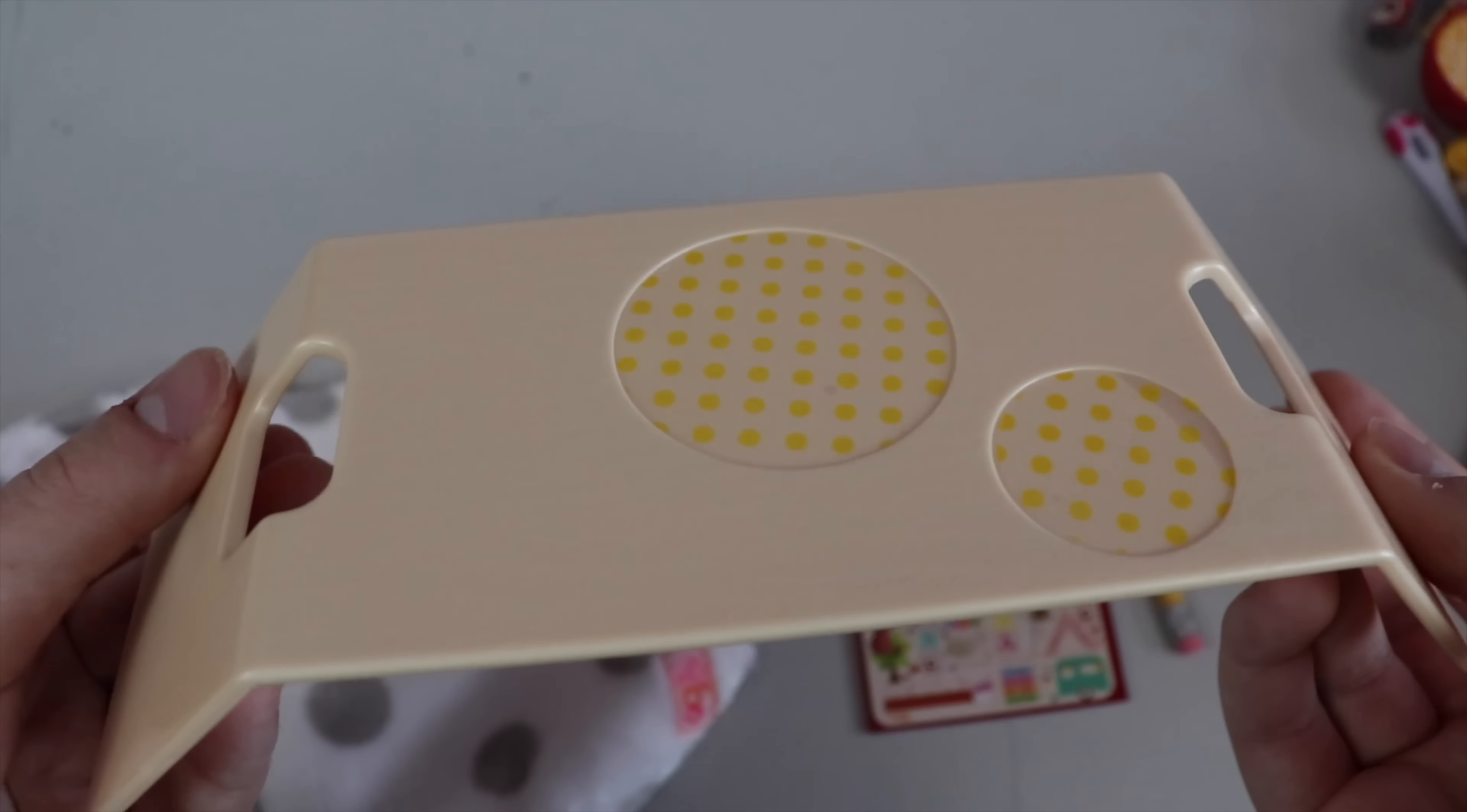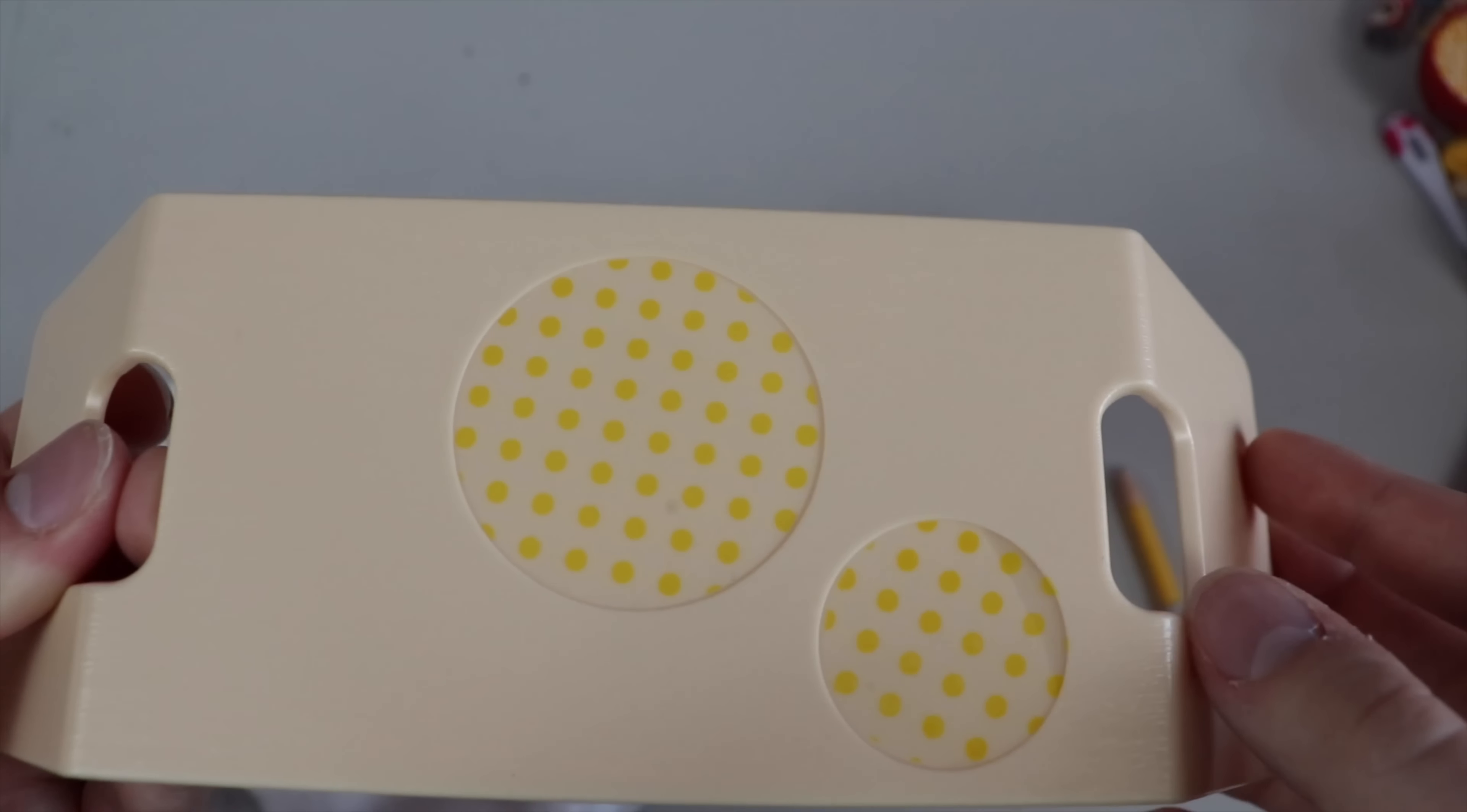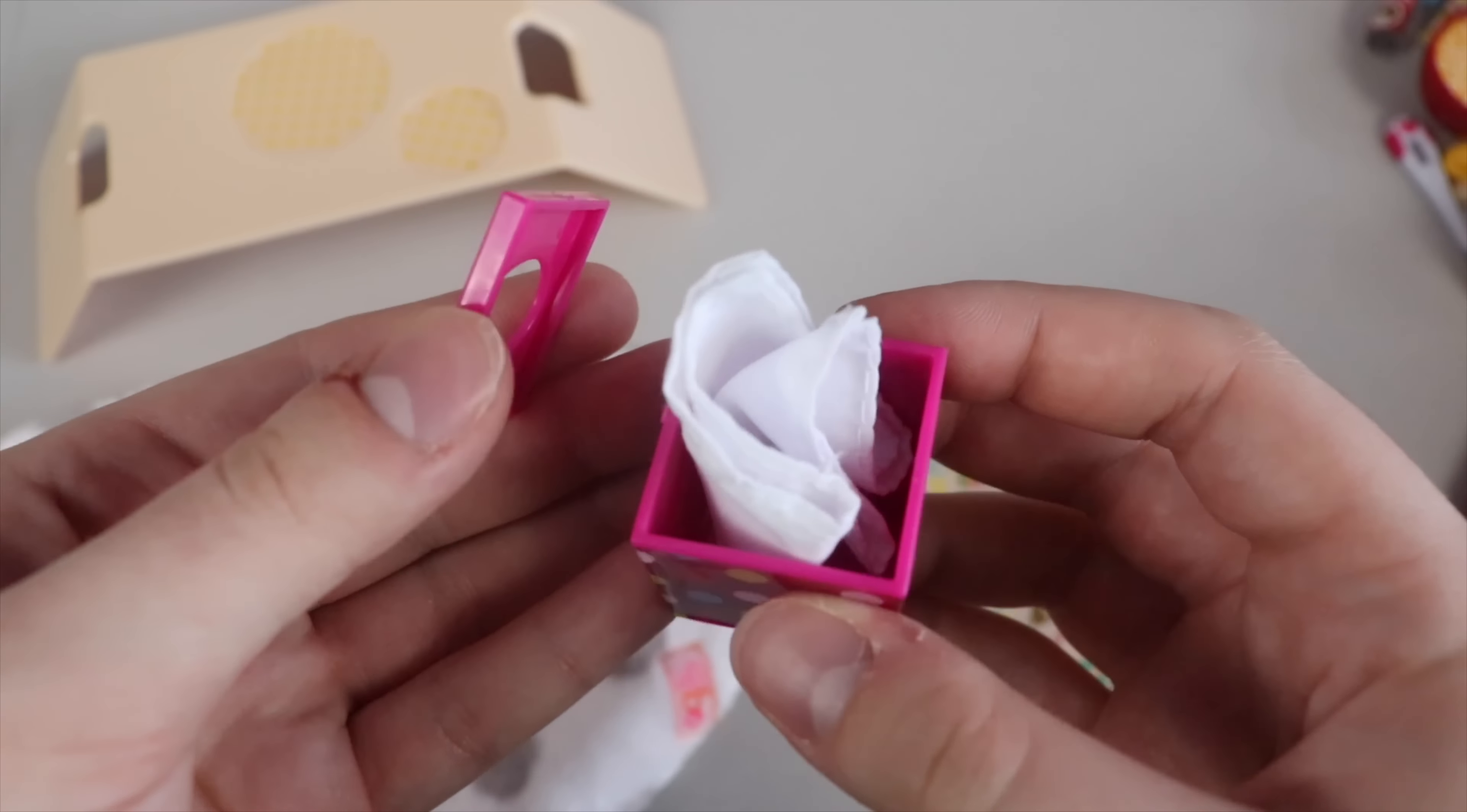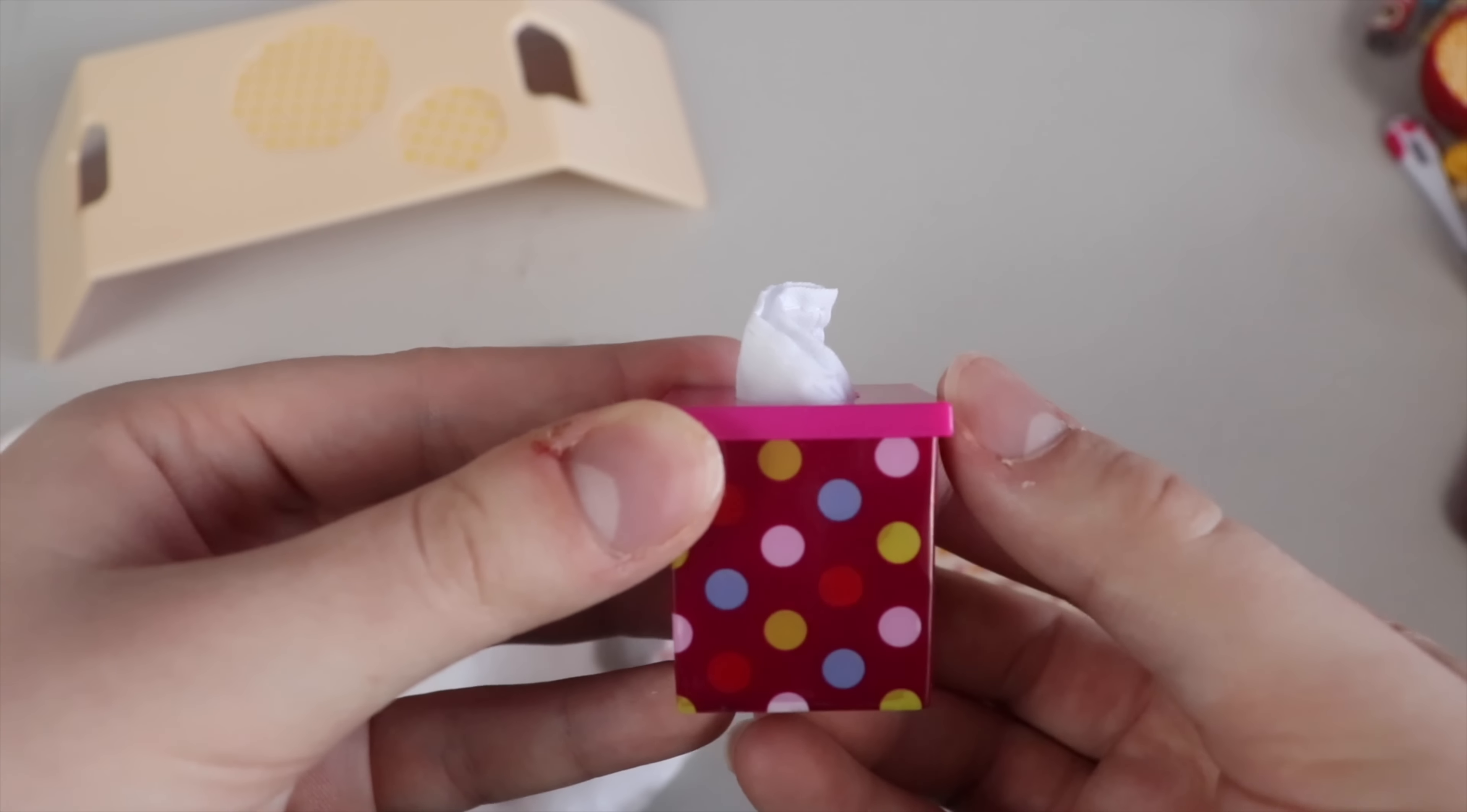The food bed tray is made of a light plastic. It bends up the corners, and it has two little circles that have yellow polka dots inside of them. So the box of tissues I find is absolutely adorable. The lid comes off, and there is a single cloth sheet inside of it. You can easily put the lid back on, and your doll can have a box of tissues.